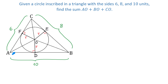Let's take a look at side AB. This side is 10 units, and the distance from A to D is unknown, so let's call it X. Then the line segment AF is also X. These two line segments are equal, because if we have a circle and a point outside the circle, and from this point we draw two tangent segments to the circle, then these two segments are equal.